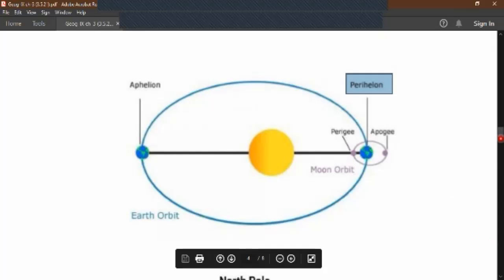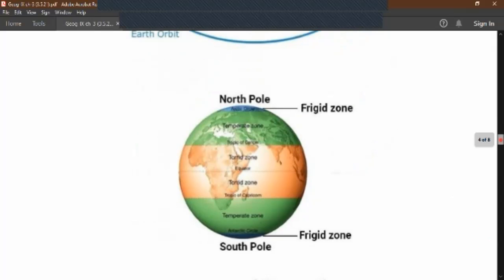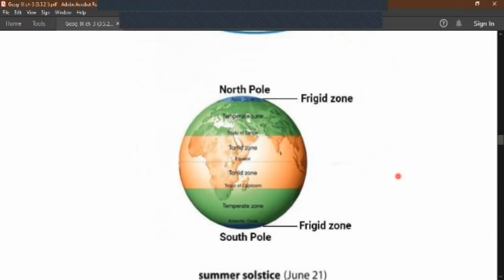The third effect is creation of heat zones. The spherical shape of the earth along with its movements around the sun causes difference in distribution of heat on the earth's surface. As a result the world has been divided into three distinct heat zones: torrid zone, temperate zone, and frigid zone. So this is about the effects of revolution.